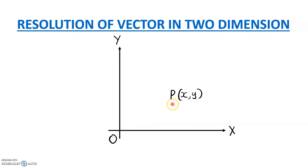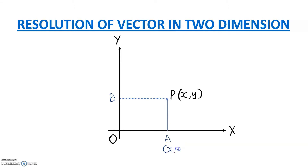Consider a point P which has its coordinates as x and y. I can further define this point here as point A with coordinates (x, 0) — because the x-axis is x and y-axis is y — and this point as (0, y). So these are our coordinates for points A and B.